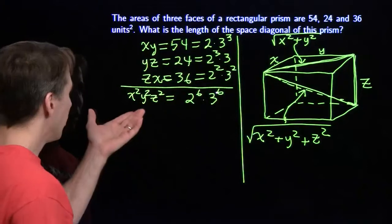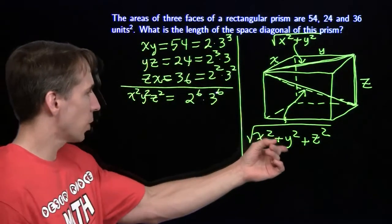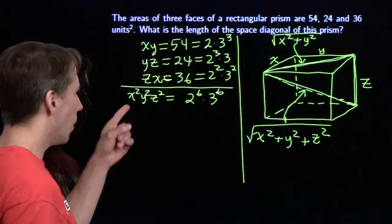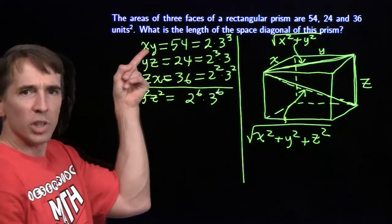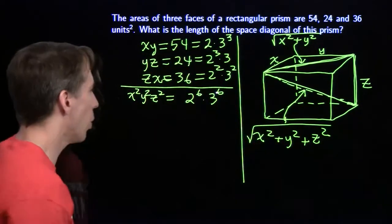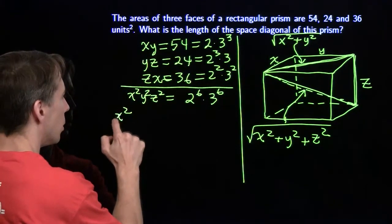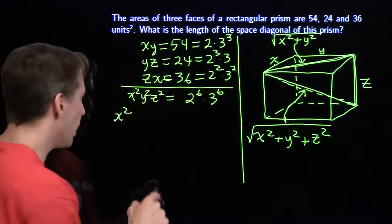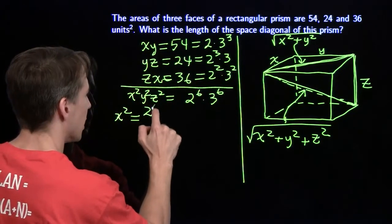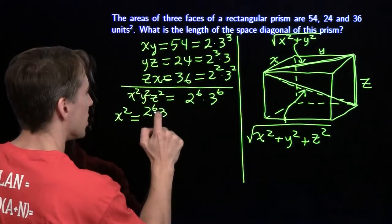So now I can just, what am I looking for? I'm looking for x squared, y squared, and z squared. I can use this in combination with these up here to find x squared, y squared, and z squared. So to get x squared, I can take this product x squared, y squared, z squared, which is our 2 to the sixth times 3 to the sixth.